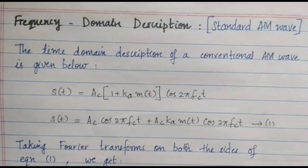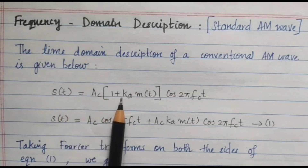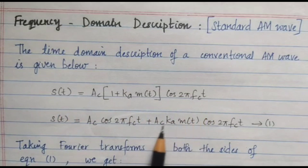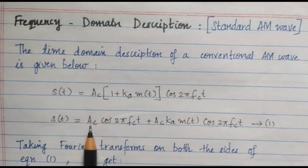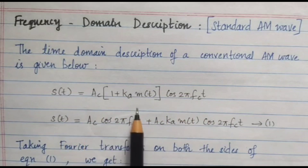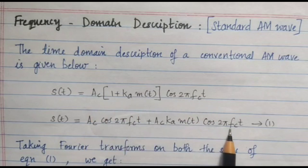Next is the frequency domain description of the standard AM wave. The time domain description of the conventional AM wave can be written as S(t) = AC [1 + KA · M(t)] cos(2π FC t), which can be expanded as S(t) = AC cos(2π FC t) + AC · KA · M(t) cos(2π FC t).